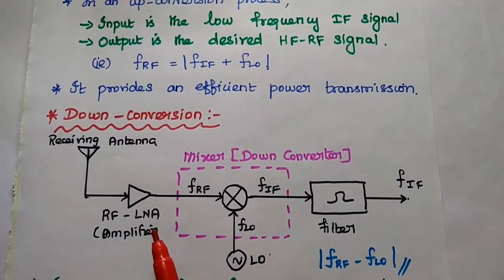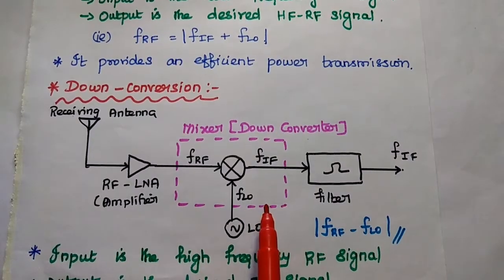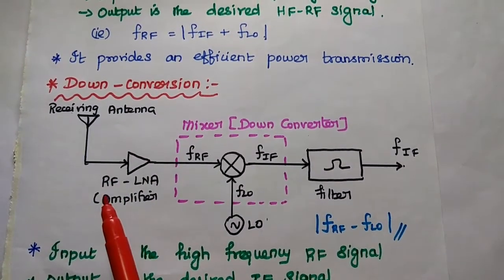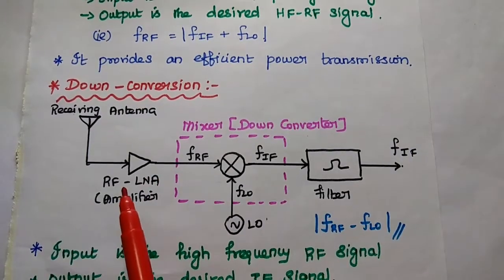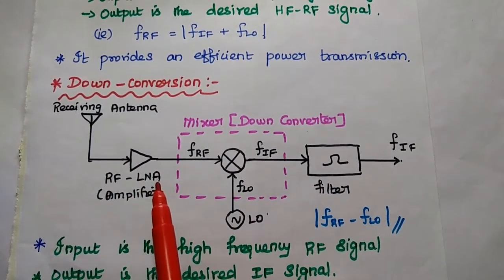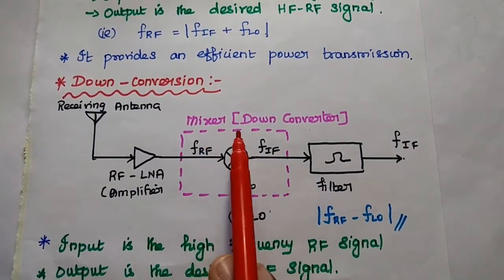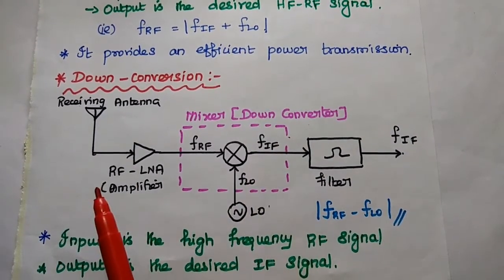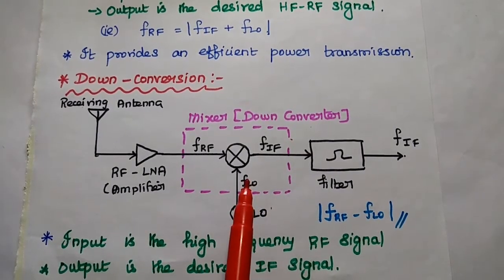Down conversion is widely used at the receiver side — it is the front end of the receiver. We receive a high-frequency signal from the receiving antenna, which is given to the low noise amplifier. The low noise amplifier amplifies the signal without degrading the signal-to-noise ratio, which is very important at the receiver side. The received high-frequency signal is then given to the mixer, which acts as a down converter. To recover the original intermediate frequency signal sent at the transmitter side, we select a local oscillator producing a frequency similar to the transmitter's fixed frequency range.